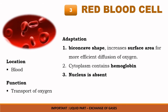When hemoglobin combines with oxygen, it forms oxyhemoglobin, and when it combines with carbon dioxide, it turns into carboxyhemoglobin. Red blood cells are located in the blood, and their function is to transport oxygen.